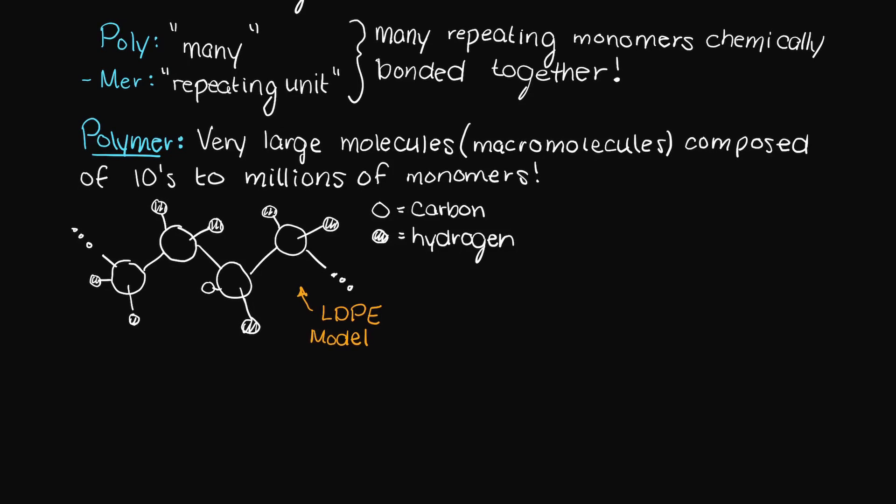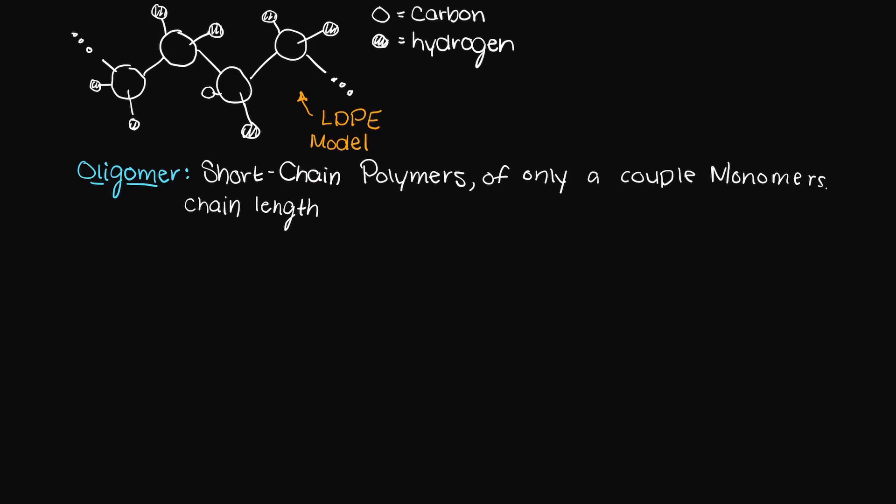You may also hear the term oligomer, which is just another way to say a short chain synthesized of only a couple monomers. But just to be clear, oligomers are polymers. However, it is typically just easier to refer to lower molecular weight or shorter polymers as oligomers and higher molecular weight or longer chains as polymers.